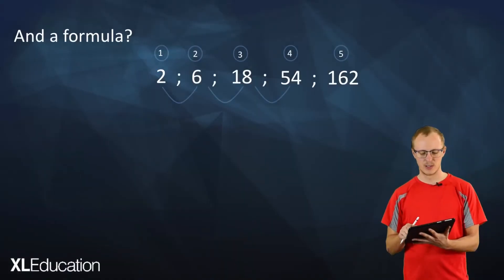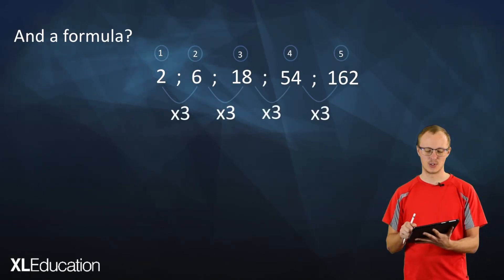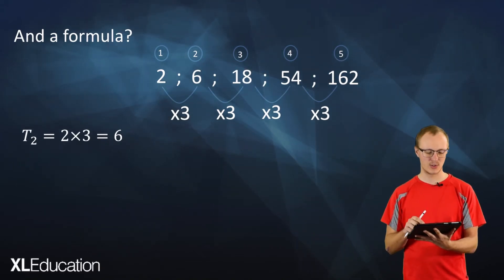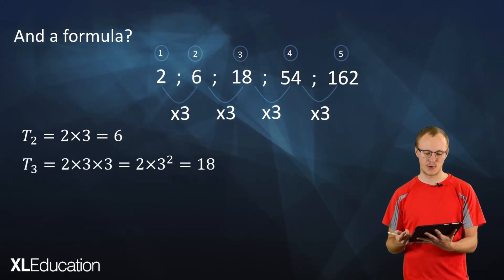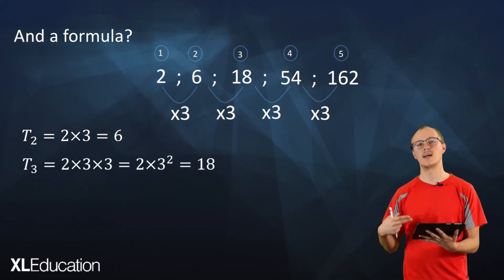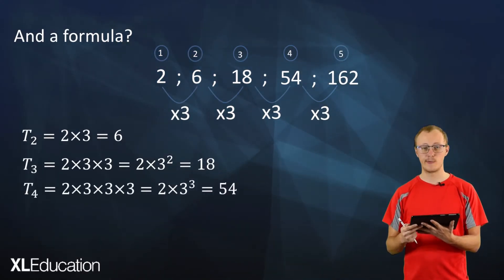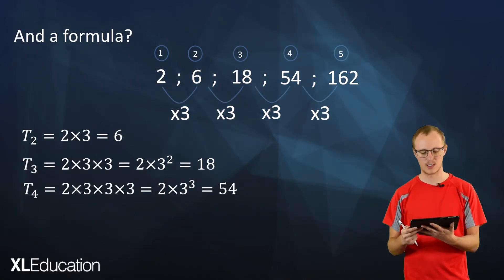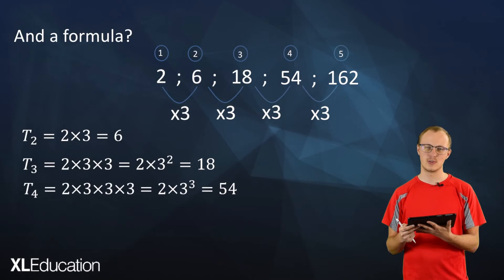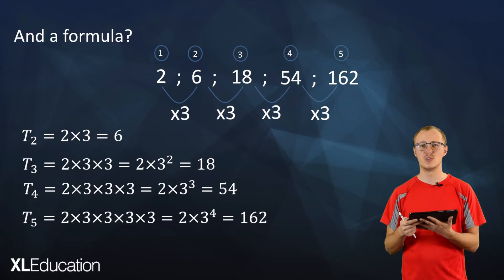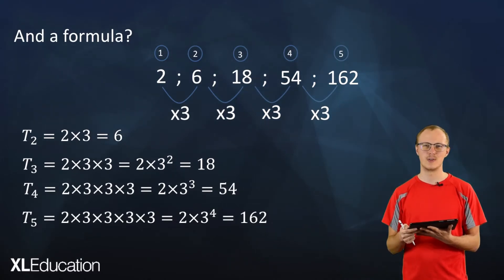Now is there a formula for a geometric sequence? We know that we multiplied by 3 to get from one term to the next. To get term 2 we go 2 times 3 equals 6. Term 3 is 2 times 3 squared equals 18. Term 4 is 2 times 3 to the power of 3 equals 54. And term 5 is 2 times 3 to the power of 4 equals 162.